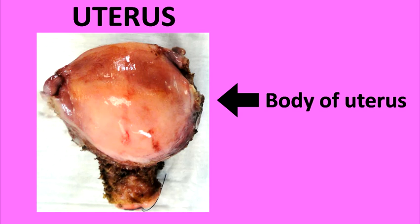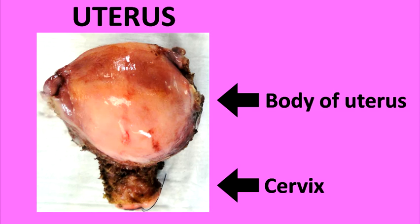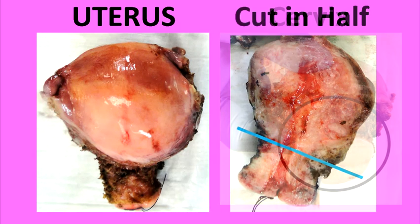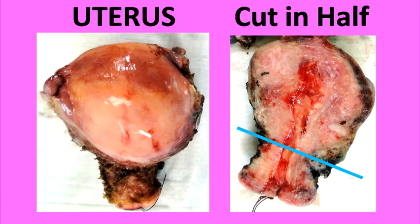Here's the uterus. The baby develops within the body of the uterus, and the cervix is the narrowed portion. The smooth, shiny area of the cervix is located at the end of the vagina. The uterine cavity is seen here, connecting to the cervical canal.